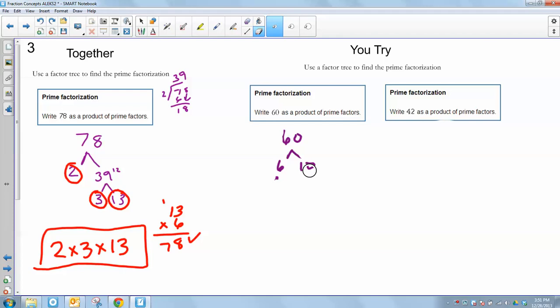You could have chosen 2 and 30. When we get down to the end, though, we should all have the same thing. So now I see that 6 can be broken into a 2 and a 3. My 10 can be broken into a 2 and a 5.